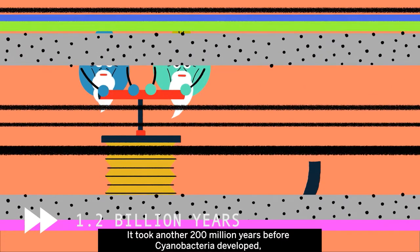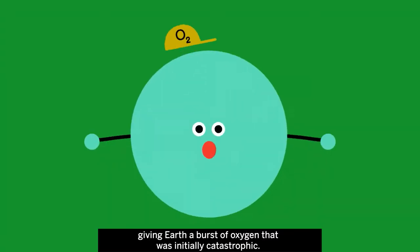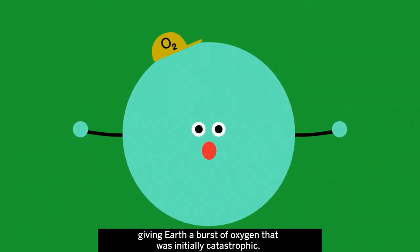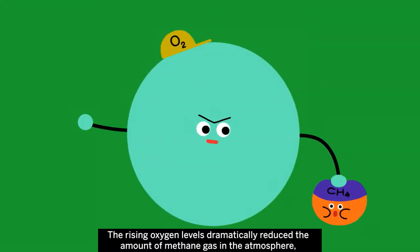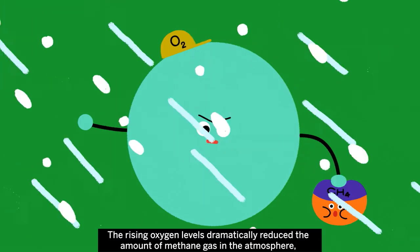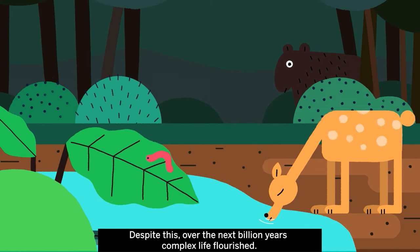It took another 200 million years before cyanobacteria developed, giving Earth a burst of oxygen that was initially catastrophic. The rising oxygen levels dramatically reduced the amount of methane gas in the atmosphere, leading to a big freeze. Despite this, over the next billion years, complex life flourished.